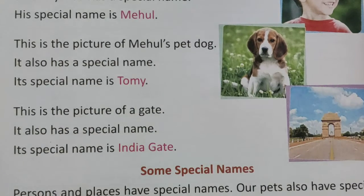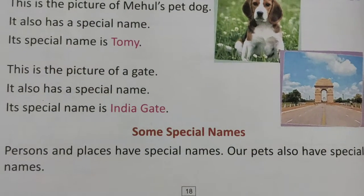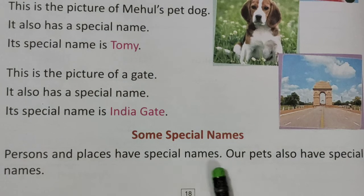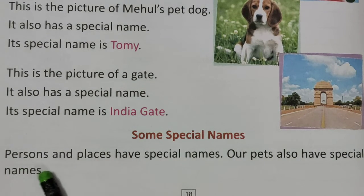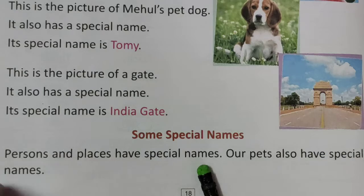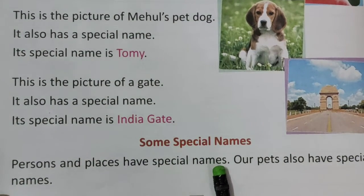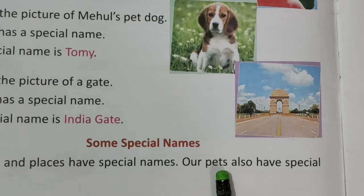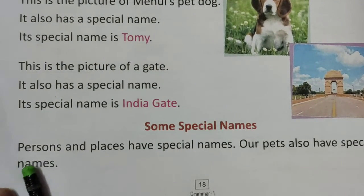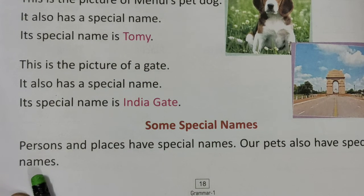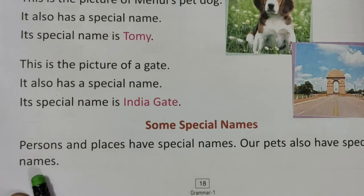Some special names. Persons and places have special names. Vyaktiyon aur isthano ke special names hote hain. Unhye unke special name se hi jana jata hai. Our pets also have special names. Humare jo pets hote hain — jo hum ghar pe animals palte hain — unke bhi hum naam rakhte hain, isliye unke bhi special names hote hain.